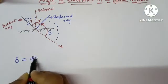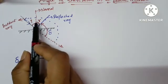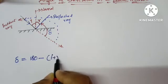So 180 minus... To calculate this angle of deviation, we have to subtract this I and R. So I plus R.